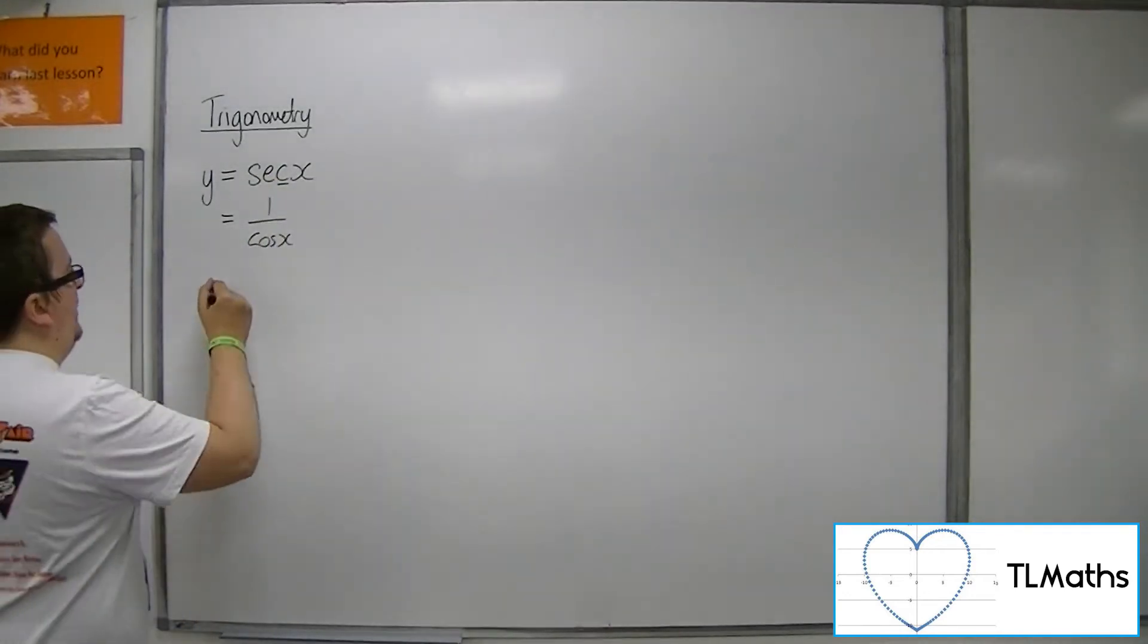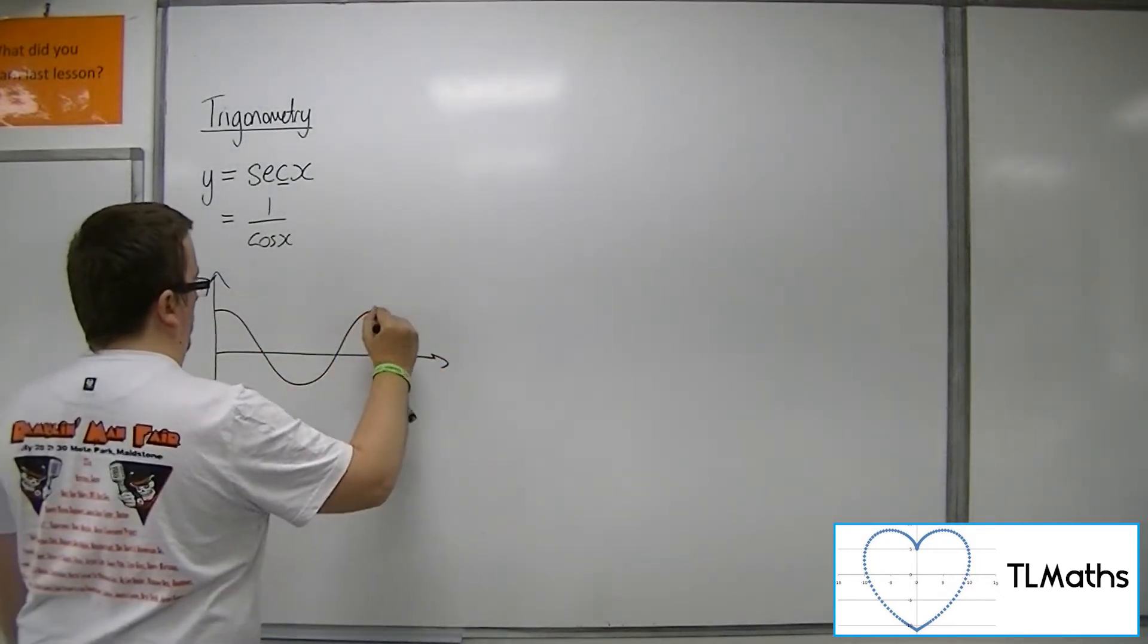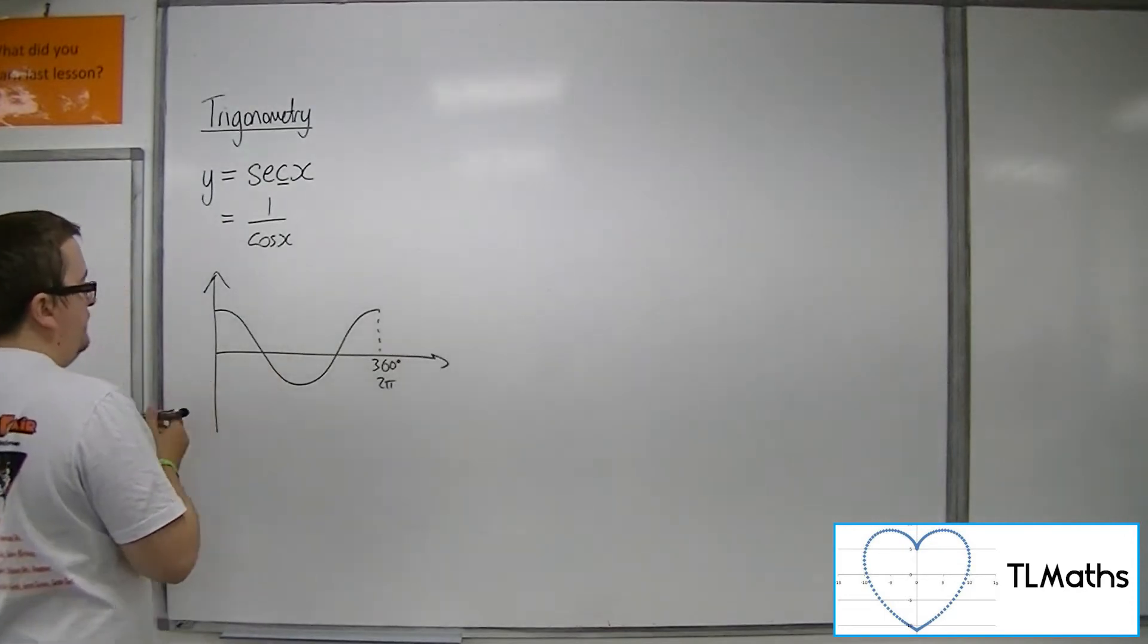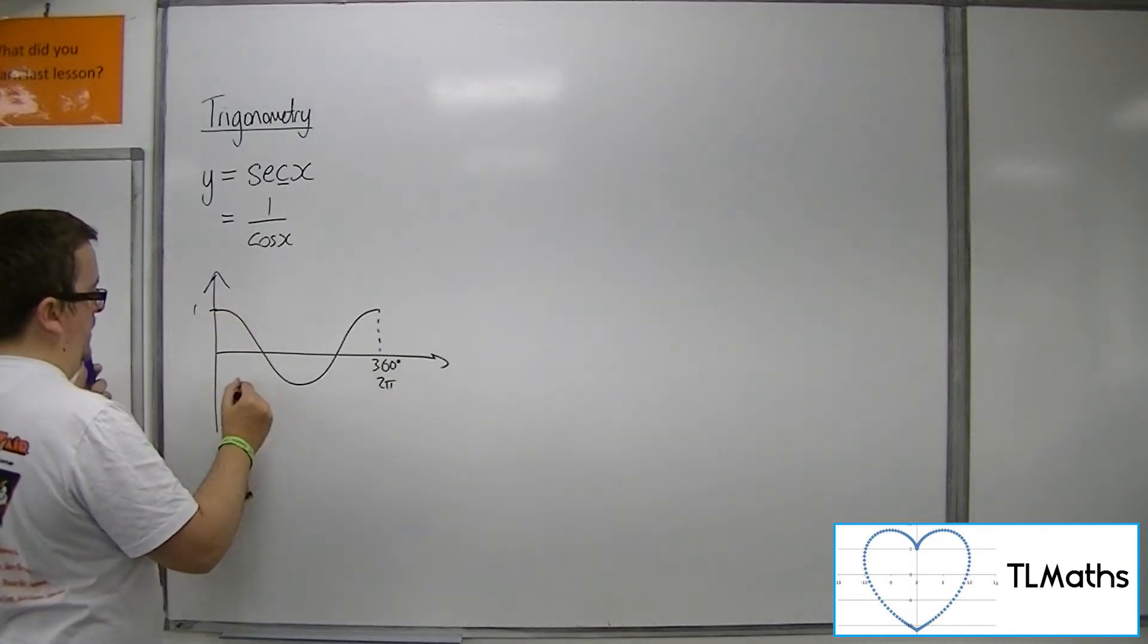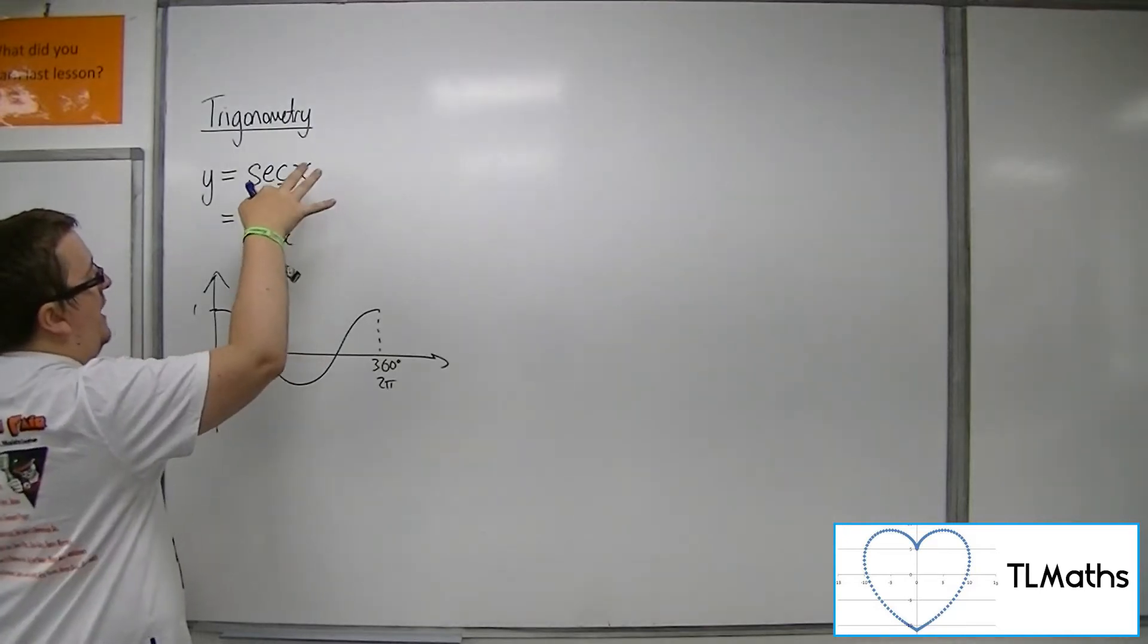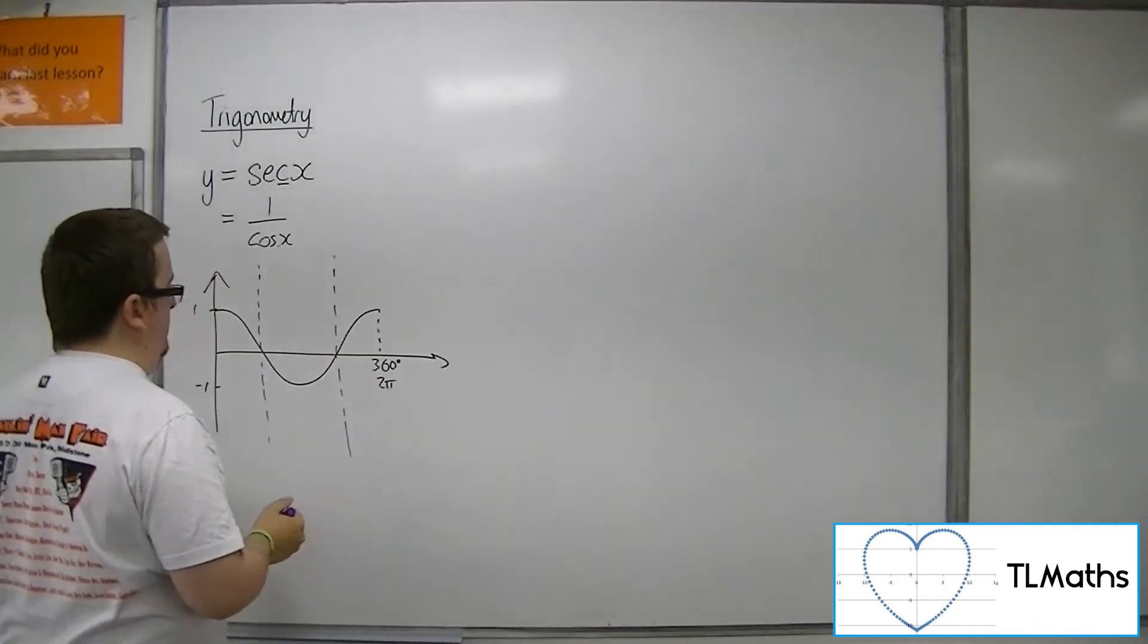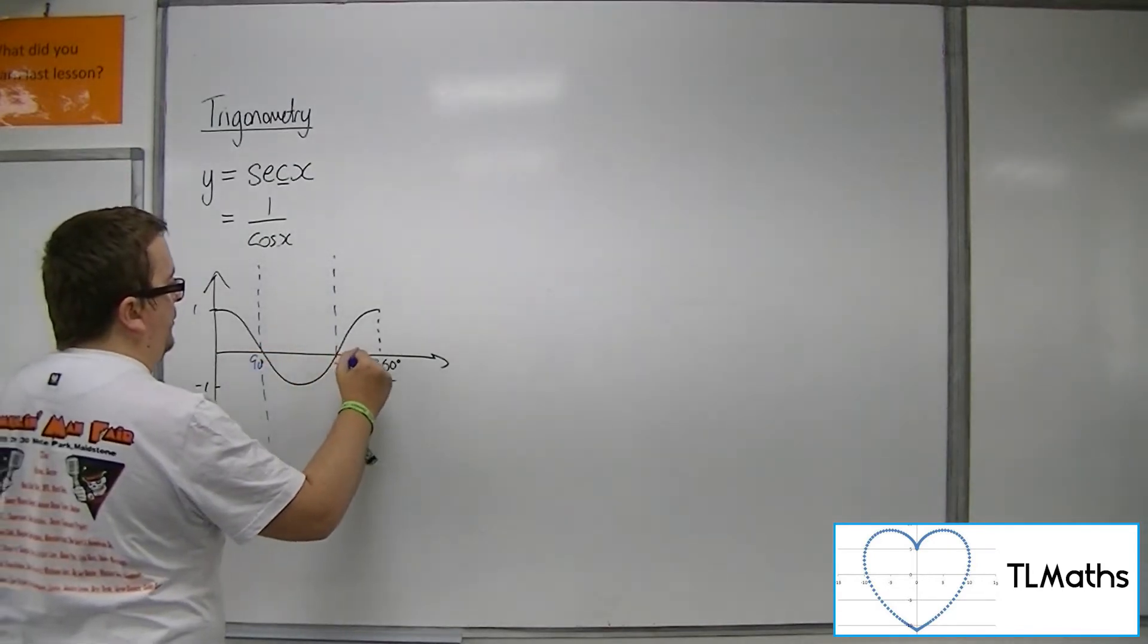If we quickly sketch cos, there's the cosine curve between 0 and 360, or 2π. When the cosine curve is 0, you're going to have 1 over 0, which causes an asymptote. So there's going to be an asymptote at 90 degrees and 270 degrees.